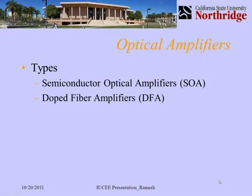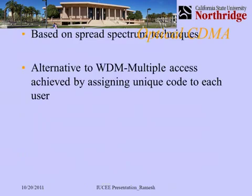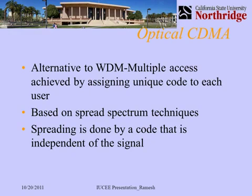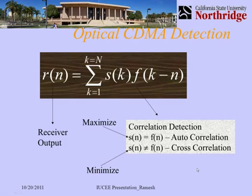Optical amplifiers eliminate the need for regeneration by keeping the signal entirely in the optical domain. Optical CDMA is an alternative to wavelength division multiplexing, where each signal is assigned a unique code and correlation detection recovers the signal. Wavelength division multiplexing is widely used in the optical regime — both coarse WDM (CWDM) and dense WDM (DWDM) are very widely used for optical communication systems.